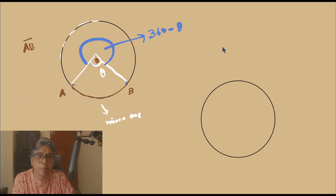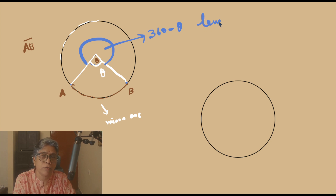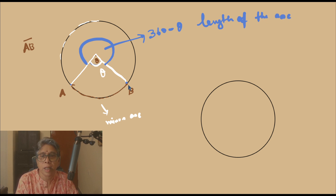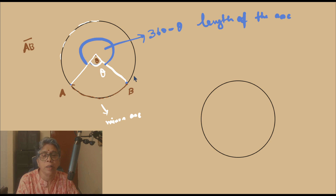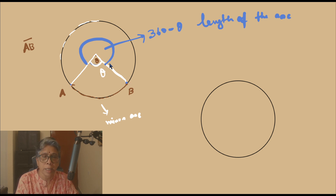This is what we mean by the length of the arc — you just take a fine thread and cover the arc, and the length of that thread would be the length of the arc. So the longer the arc, the greater the angle measurement.